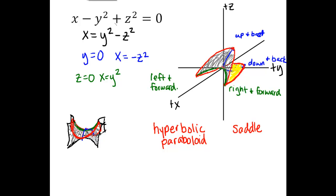The hyperbola is where the name hyperbolic paraboloid comes from. Looking at the equation x equals y squared minus z squared, if I plug in some different values for x — instead of just x equals zero, which would give me a degenerate hyperbola — I'll plug in a positive or negative value. For example, when I plug in x equals positive 1, I get 1 equals y squared minus z squared. That hyperbola out at x equals 1 opens in the y direction and would lie on my surface. I don't usually find it helpful to draw those hyperbolas in when actually sketching the surface.